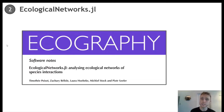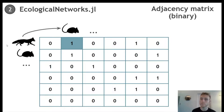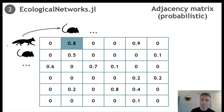I will not go through all functionalities of this package, since my co-workers wrote a well-written paper on the matter. But basically, Ecological Networks stores data in a matrix format — the adjacency matrix. Every species has its row and/or its column, and the value of the interaction from the row species to the column species is stored in the corresponding cell. The value is binary when we only consider the presence or absence of an interaction. It can also be quantitative, if we are interested in the strength of the interaction, or probabilistic, if we are interested in the probability of two species interacting.